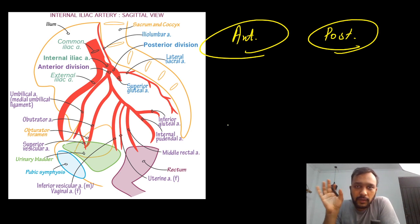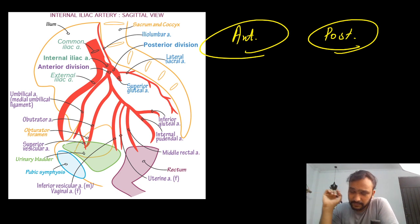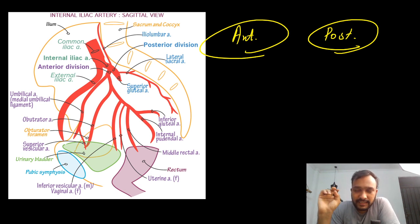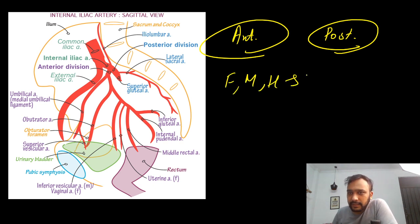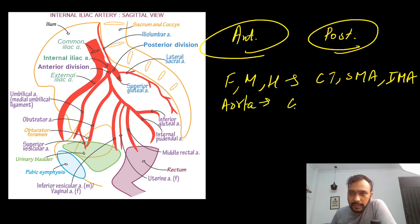All your abdominal organs, your gut, and your lower limbs are going to be supplied by your descending abdominal aorta. We all know your foregut, midgut, and hindgut are supplied by your celiac trunk, superior mesenteric artery, and inferior mesenteric artery. Then the aorta divides into two common iliac arteries, and the common iliac further divides into internal iliac and external iliac artery.